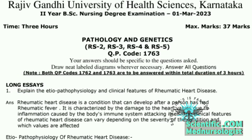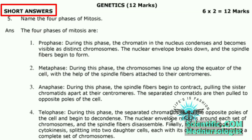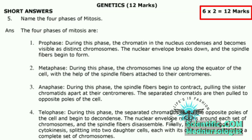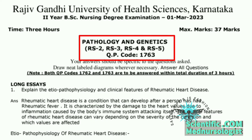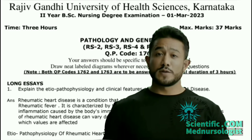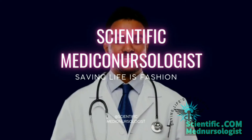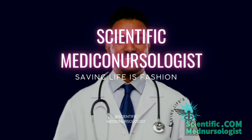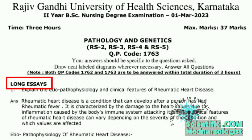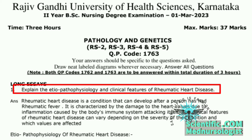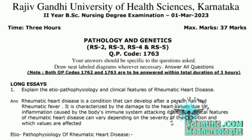The first part is long essay which carries 10 marks, the second part is short essay which carries 20 marks, and the third part is short answers which carries 8 marks. Now let's start — our first part is the long essay, which consists of a single question: explain the etiopathophysiology and clinical features of rheumatic heart disease.